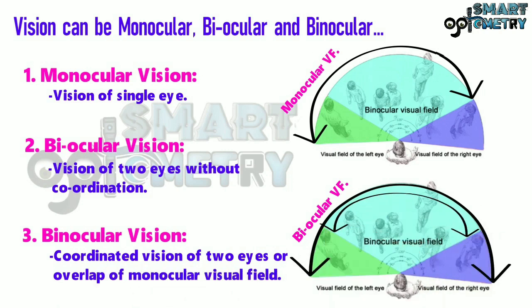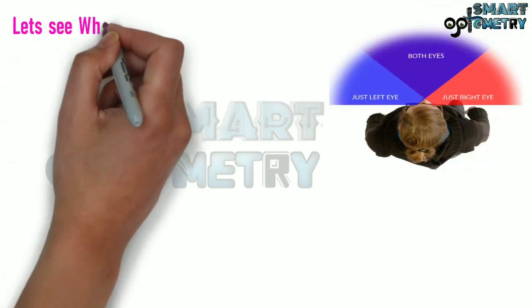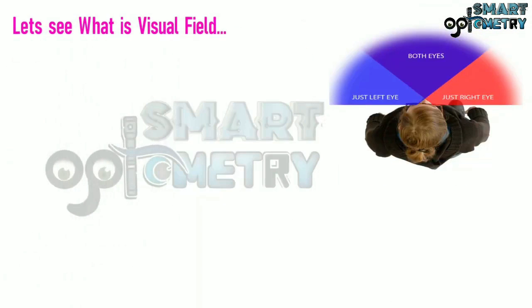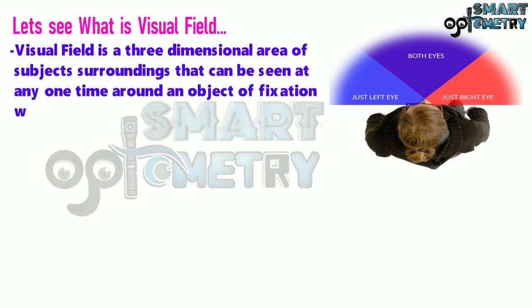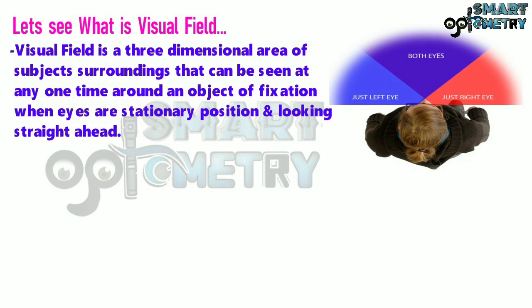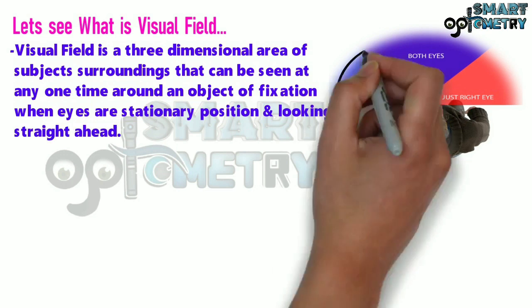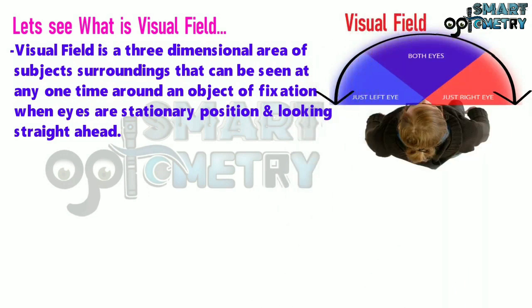Here you can see the binocular visual field. Visual field is a three-dimensional area of a subject's surroundings that can be seen at any one time around an object of fixation when the eyes are in a stationary position and looking straight ahead.